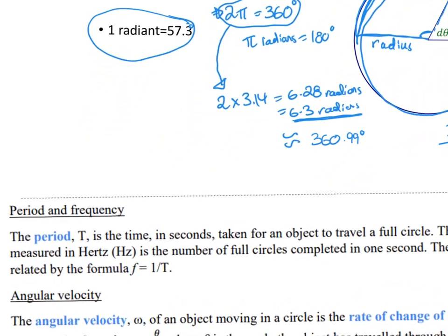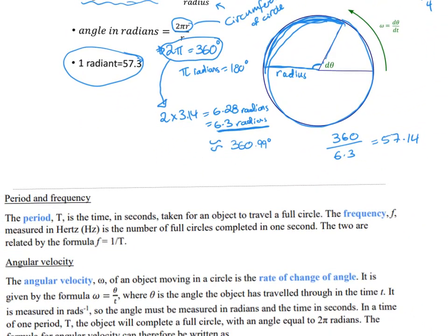Some key terms: the period is the time in seconds for an object to travel a full circle — one complete revolution. Frequency is the number of full circles completed in one second. We already know these are related from the waves chapters: frequency f equals 1 over T. Frequency is expressed in hertz and period in seconds, so hertz is effectively per second.